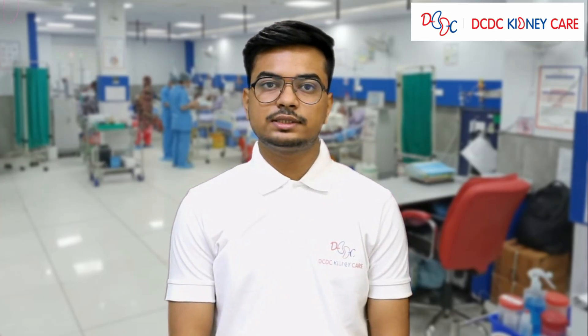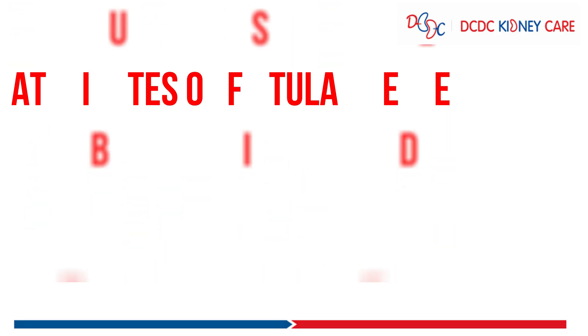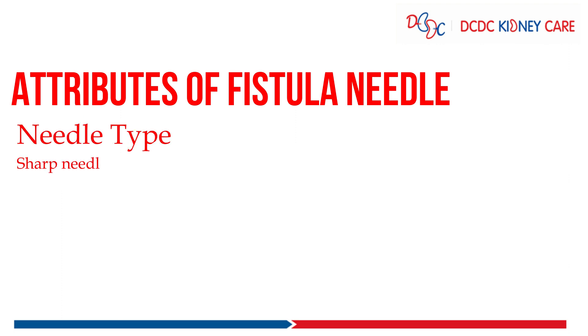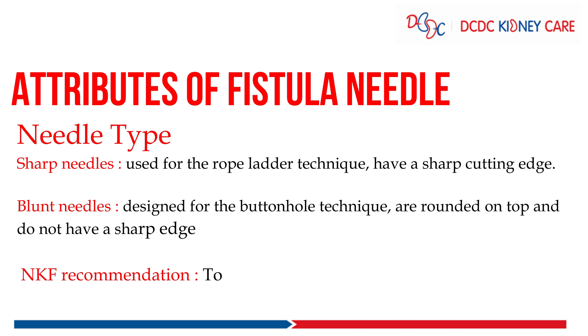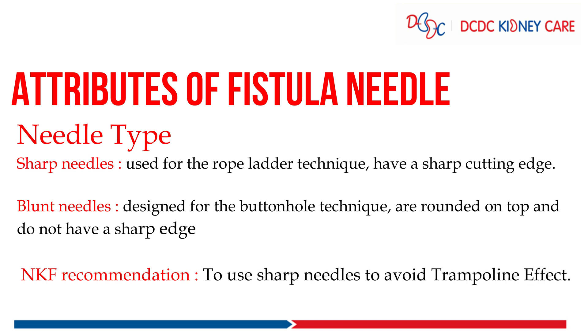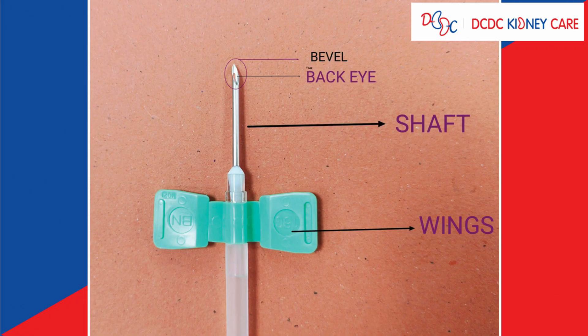Firstly, we will discuss the attributes of fistula needle. The first attribute is the needle type. Generally, we have two types of needles: one having sharp edges called a sharp needle, and the other having round edges called a blunt needle. We generally use sharp needles as per the National Kidney Foundation's guidelines. The fistula needle consists of wings, needle shaft, bevel, and back eye.